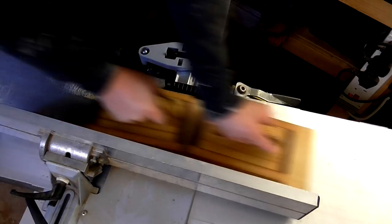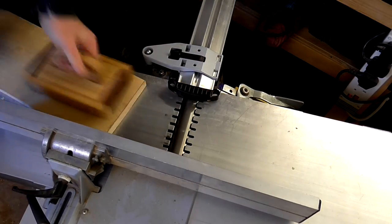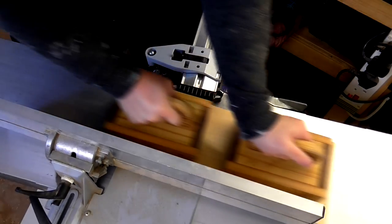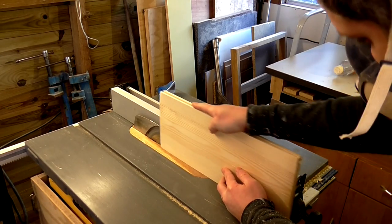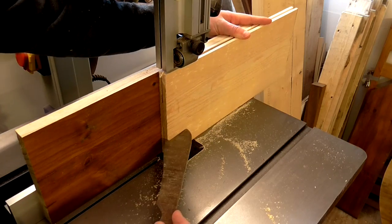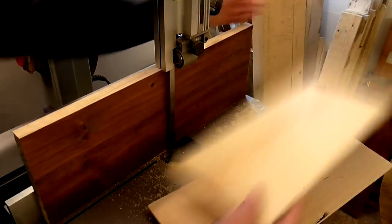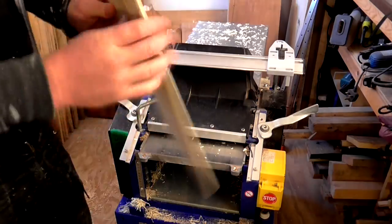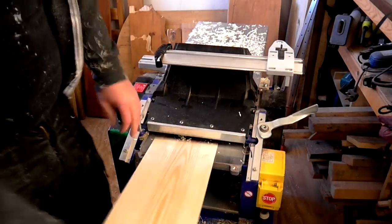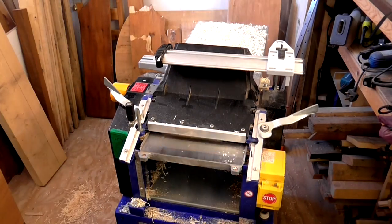Then I jointed the face of the pine again to cut it flat so that I could then cut a second slice in the same way. Then I ran both slices through the thicknesser a few times, with the final pass set at its minimum thickness to clean up the edges that I'd just cut and make everything perfectly straight.